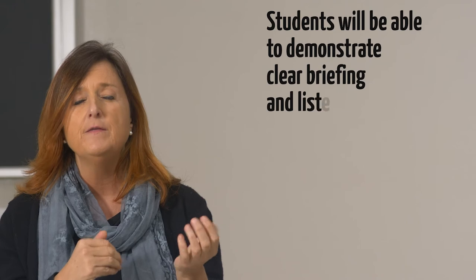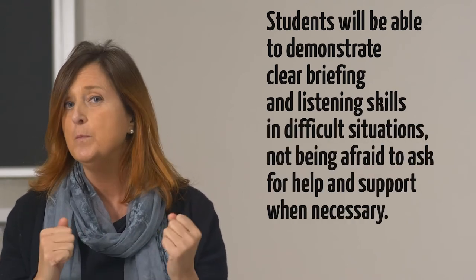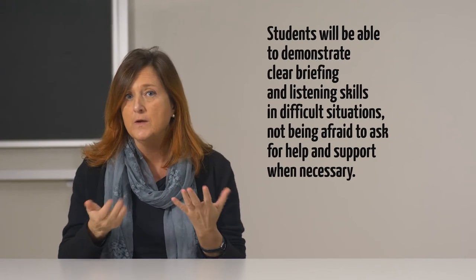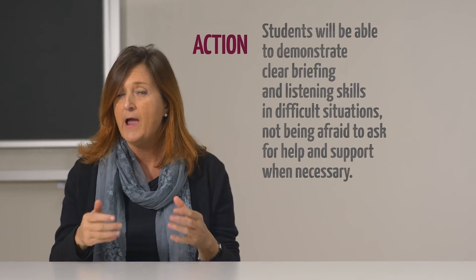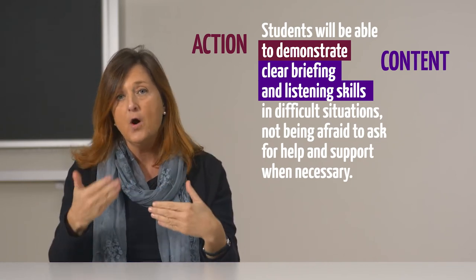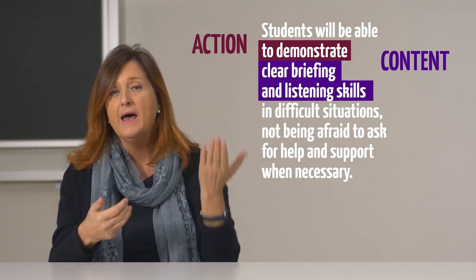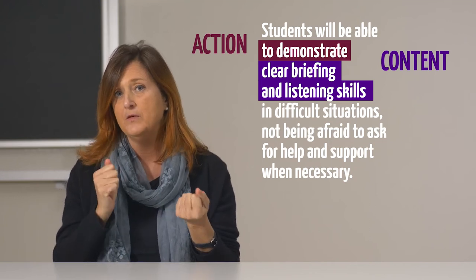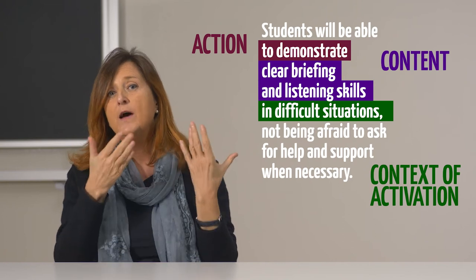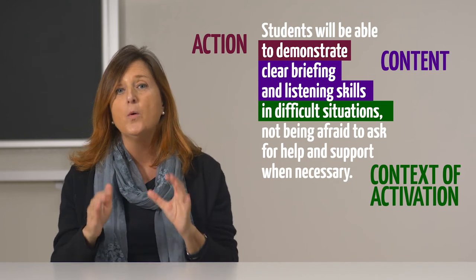Here we have an example of an intended learning outcome: students will be able to demonstrate clear briefing and listening skills in difficult situations, and not be afraid to ask for help and support when necessary. If our goal is to assess the achievement of this intended learning outcome, the test — the tool that we use to measure something — that we submit to our students will first of all activate the action described as 'demonstrate clear briefing and listening skills.' Then we will have to activate them in terms of the content indicated by the intended learning outcome and in the corresponding scope. Here we also have the context of activation of the performance. For example, we could ask students to peer-assess presentations done by colleagues based on a rubric we provide.